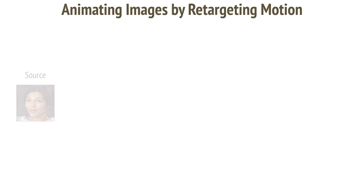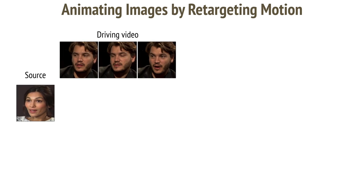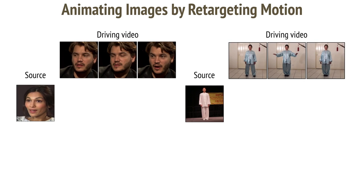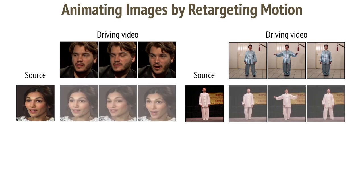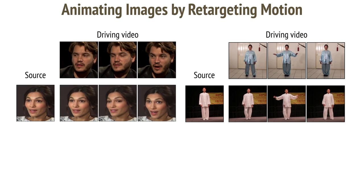In order to create an animated video, we start with a source image, or an image we want to animate, and a driving video, or a video that contains the desired motion. This applies to multiple object categories. Here is the retargeting result generated using our method.